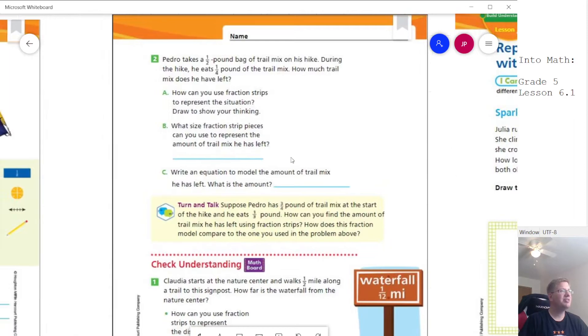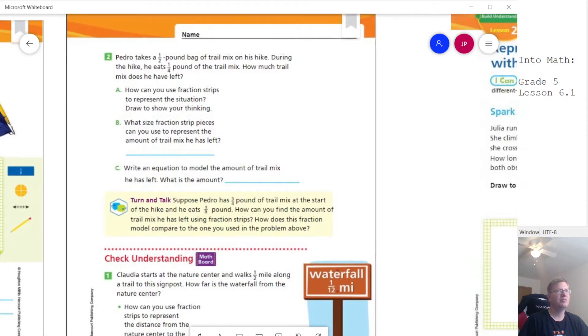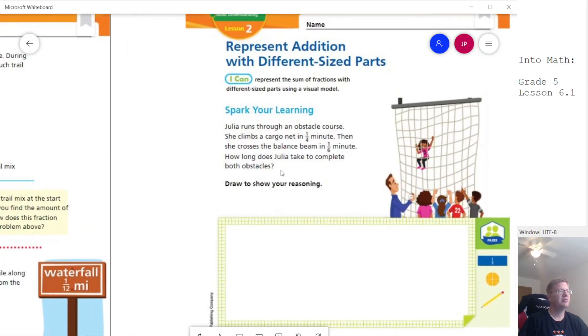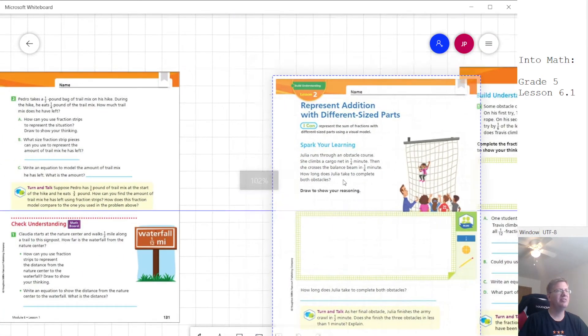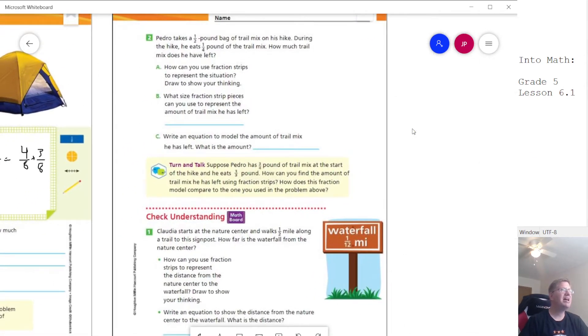And then for our second example, we have a one half pound bag of trail mix, and then he eats one fourth of a pound and we want to figure out how much he has left. So how can we use fraction strips? We can do this.